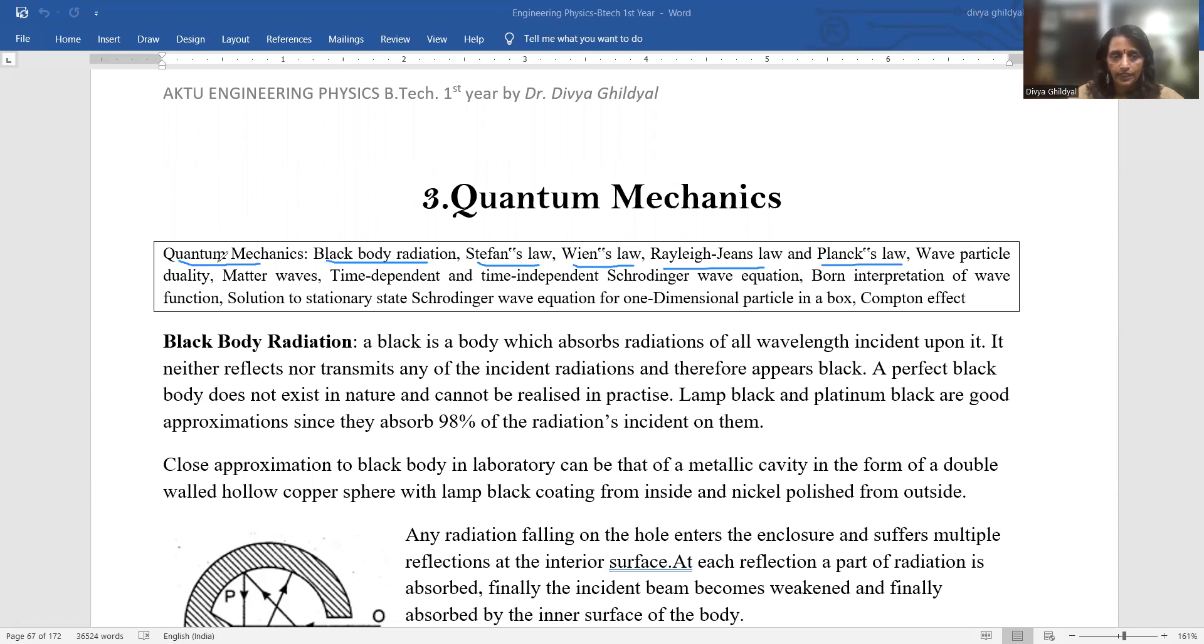Next, wave-particle duality. Light possesses dual character - at times it behaves as a wave and at times as a particle. Matter waves consist of both wave and particle components. The most important part is the time-dependent and time-independent Schrödinger wave equation. You should know their derivation and one study case in detail: particle trapped in one-dimensional box. And last, Compton effect - the definition and formula for variation of wavelength when a particle undergoes Compton effect. Let us begin with the syllabus.